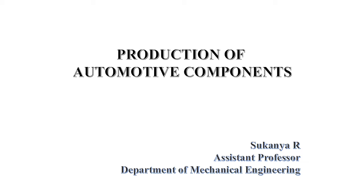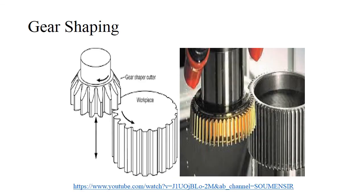Welcome to the lecture on production of automotive components. In this we'll be discussing a few more gear teeth manufacturing processes. First we'll discuss gear shaping. As you can see in the image on the left-hand side, there is the gear shape cutter, and here is the work piece. This work piece, which can be initially made either by a casting process or rolling process, can be further machined for making the teeth by using a gear shape cutter. You can see the cutter which has the profiles.